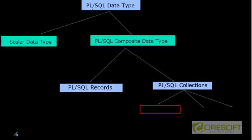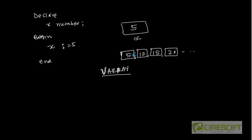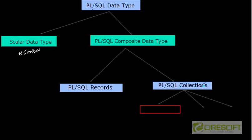The bigger picture is that PL/SQL data types are of two types: scalar types like number, date, varchar, and composite data types. In composite data types we have record type, which we discussed in previous videos, and PL/SQL also supports collections. In this tutorial we are going to focus mostly on v array within these collections.